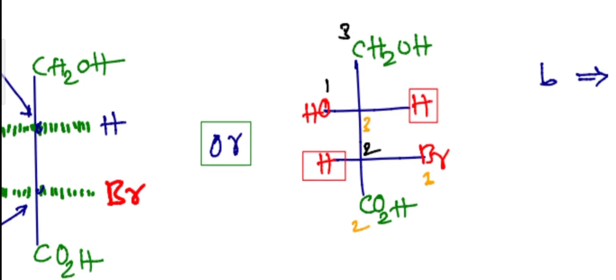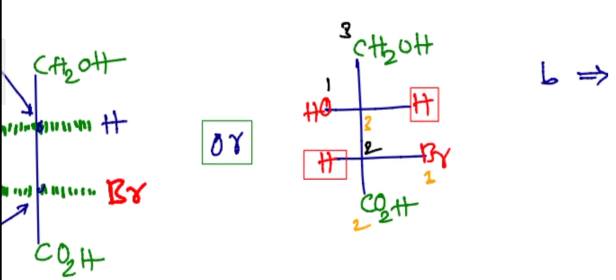In case of Fisher projection, generally the fourth priority is assigned according to its atomic number. Look at this chiral center, the first chiral center for example. In this case, bromine occupies the first position.